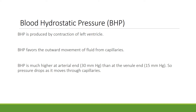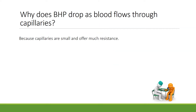BHP favors the outward movement of fluid from the capillaries, and it's much higher at the arterial end than it is at the venule end. This means pressure drops as it moves through the capillaries. It's not only important to realize that BHP drops as blood flows through the capillaries, but to understand the reason why. The main reason is because capillaries are very small and offer a lot of resistance.